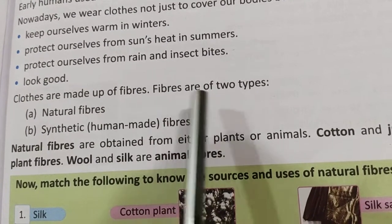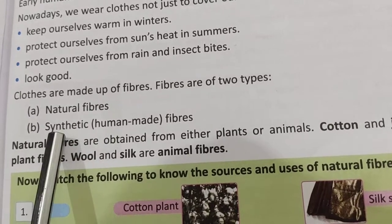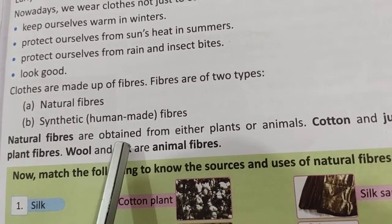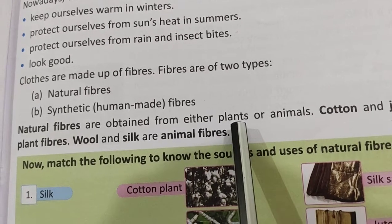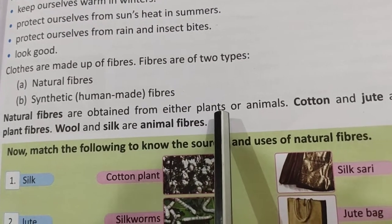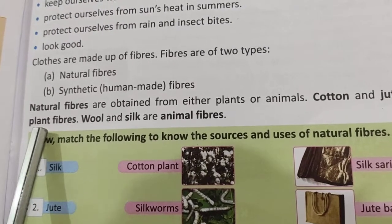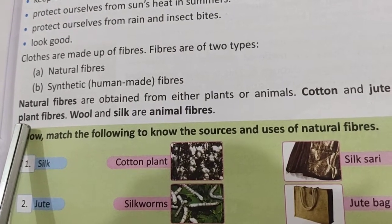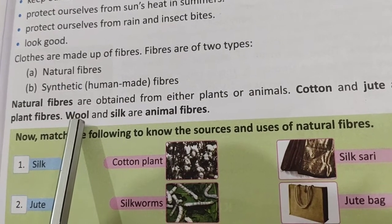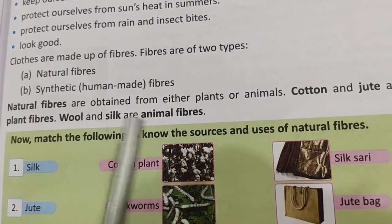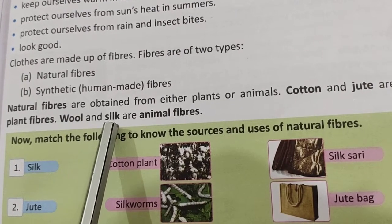Clothes are made up of fibers. Fibers are of two types: natural fiber and synthetic fiber. Natural fibers are obtained either from plants or from animals. Cotton and jute are plant fibers — cotton comes from the cotton plant and jute from the jute plant. Wool and silk are animal fibers: wool comes mainly from sheep, and silk comes from the silkworm.